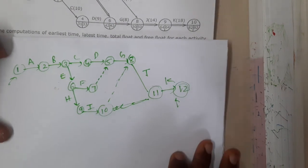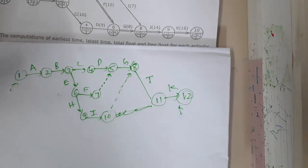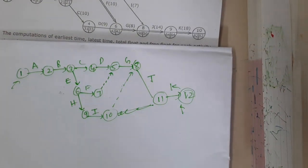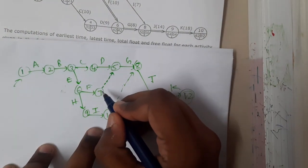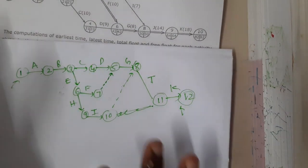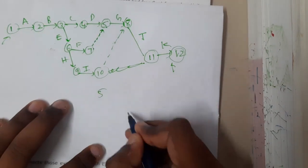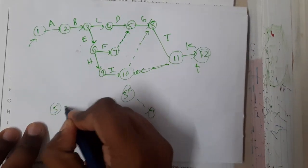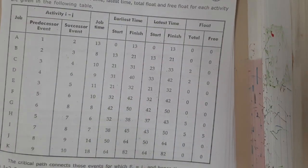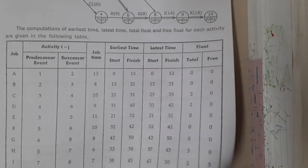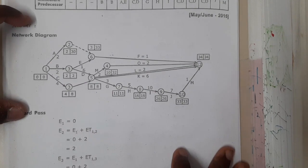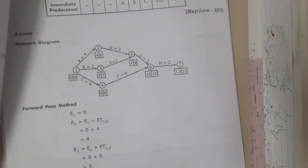Our starting point is node one and ending point is node twelve. Comparing with the given diagram — it matches exactly. When drawing these diagrams, I went bottom to top while the textbook went top to bottom; both approaches work. Don't worry if your diagram looks different from a friend's, as long as the logic is correct. It is always better to draw activities in increasing event order — from minimum to maximum node numbers. The same forward-backward process applies here.